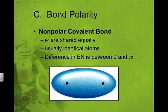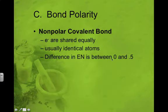This usually happens between identical atoms. So if I have an H and H sharing electrons or chlorine and chlorine sharing electrons, it'll be nonpolar. So the difference in the electronegativity should be between 0 and 0.5. So let me show you an example of that.